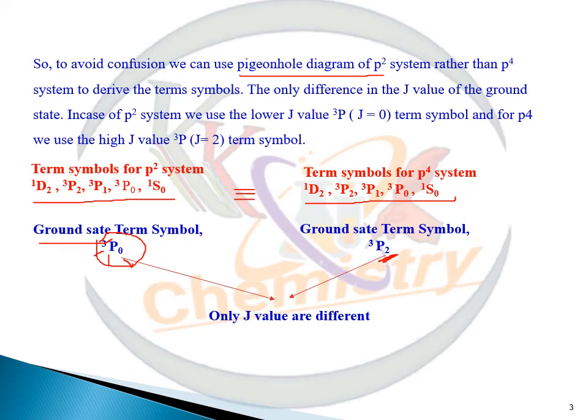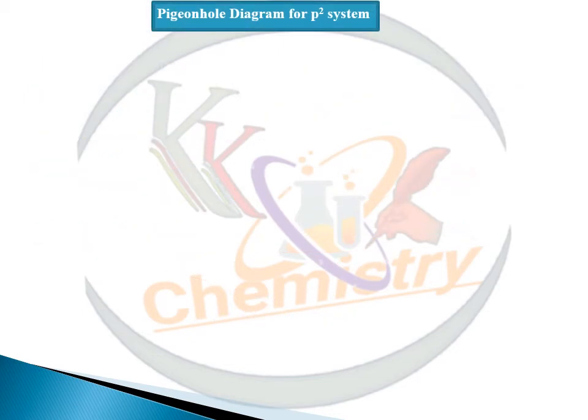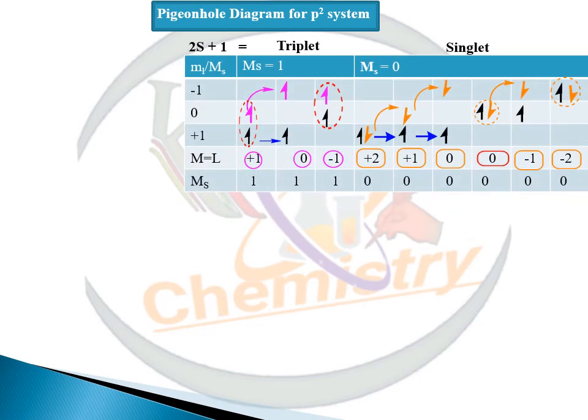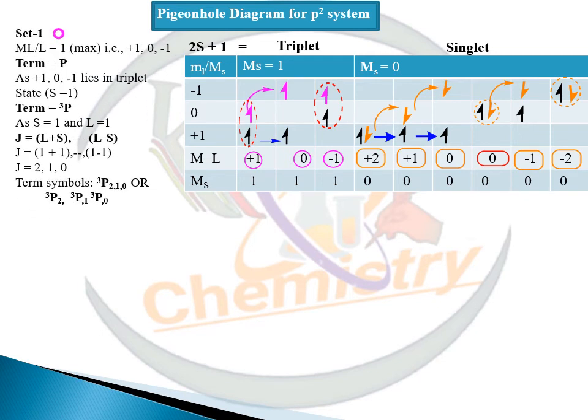Now if someone gave you an assignment to derive term symbol for P⁴ system, don't go for P⁴ system, just go for P² system because P² system is equivalent to P⁴ system. We have also previously calculated or derived term symbol for P² system in our lecture number 13, part 1.